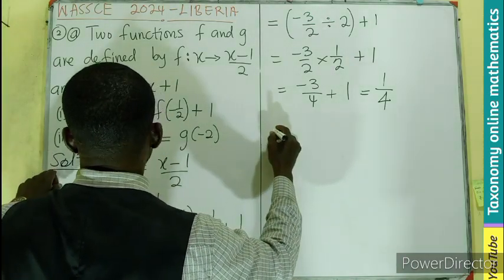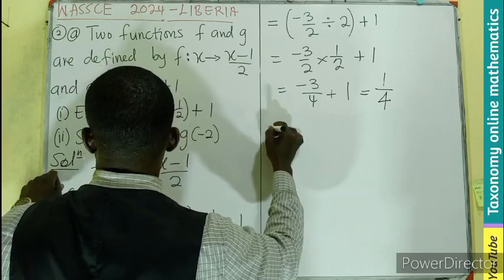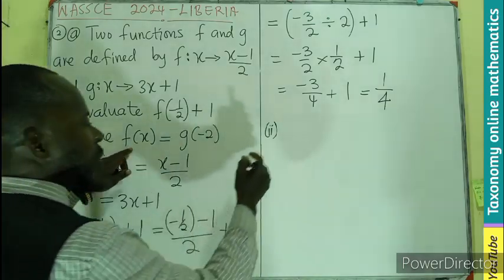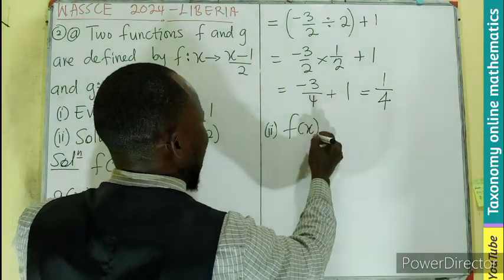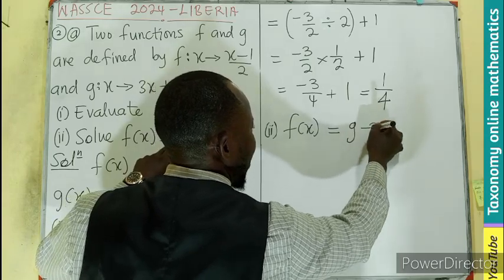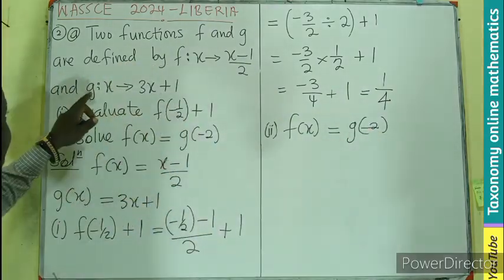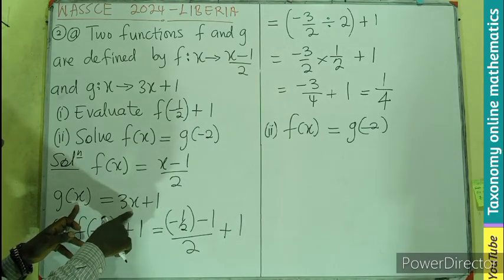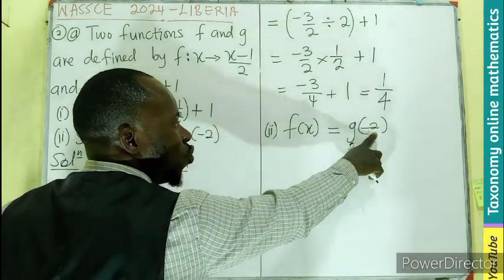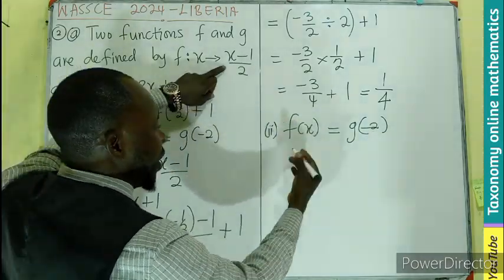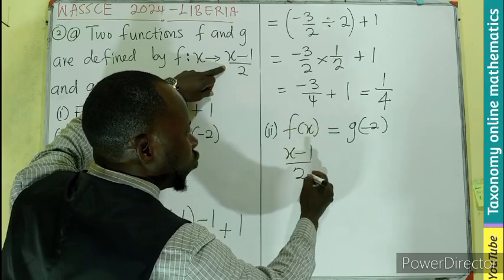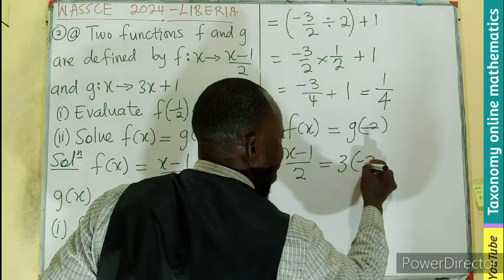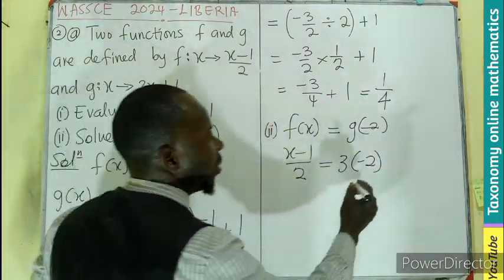Then the second part, that's (ii), right? So this part is saying that we are picking f(x) equals g(-2). Meaning the g was pregnant with x, but as well as seeing the x here, now we are changing the x to become -2, whereby we maintain this function, which is (x-1)/2 equals 3x. And the x is now changed with -2, then plus 1.